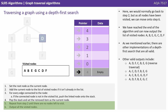Here we would normally go back to step 2, but as all nodes have been visited, we can now move onto step 6. We have reached the end of the algorithm, and can now output the list of visited nodes: A, B, E, G, C, D, F. As we mentioned earlier, there are other implementations of a depth-first search that are all valid, and we've listed some other valid outputs here.